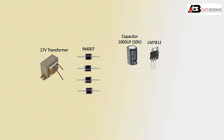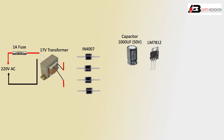IC LM7812, meaning fixed voltage control 12 volt — input voltage 24 volt, output voltage 12 volt, or 220 AC volt. AC input: transformer input neutral is transformer common, or phase terminal is fuse 1 ampere positive terminal, or transformer outgoing.